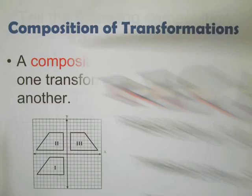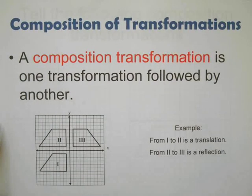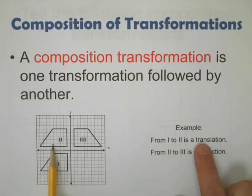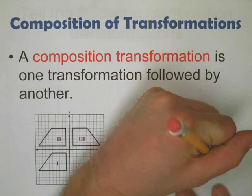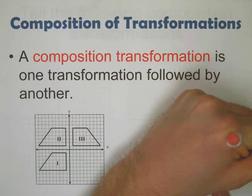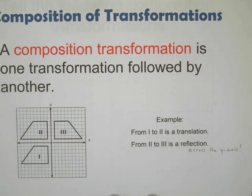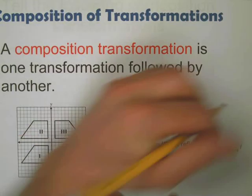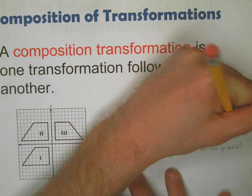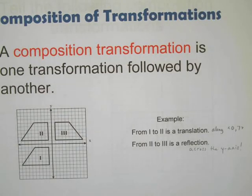A composition transformation is one transformation followed by another. You'll see things like Roman numerals that tell you the order to get from shape one to shape two. It looks like it was translated upward — that's a translation. To get from two to three it looks like it was reflected across the y-axis. We can even find the translation vector: it went upward seven points, so the translation is along the vector (0, 7), then a reflection across the y-axis.